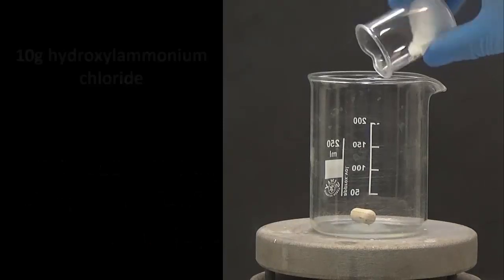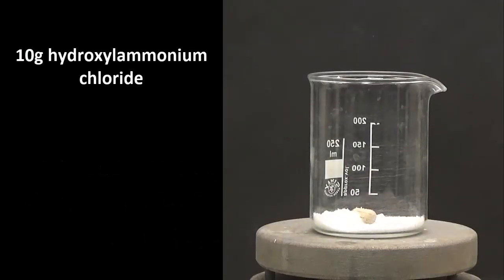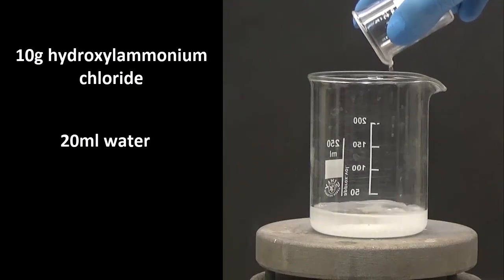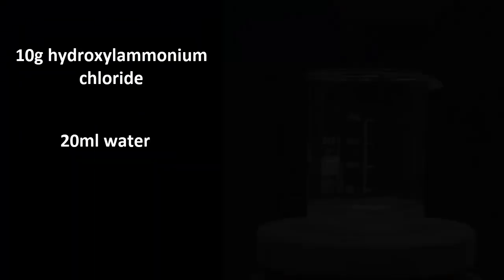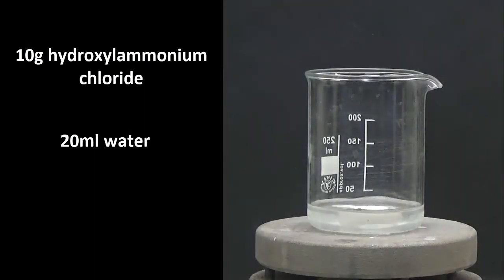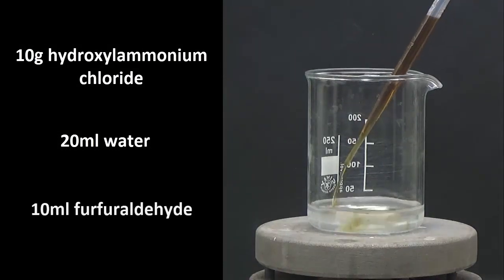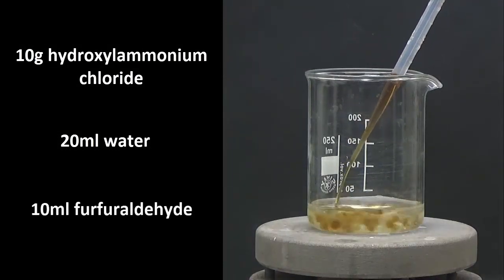To proceed, we will dissolve 10 grams of hydroxylammonium chloride in 20 milliliters of water in a 250 milliliters beaker. When dissolved, add 10 milliliters furfural with strong stirring.